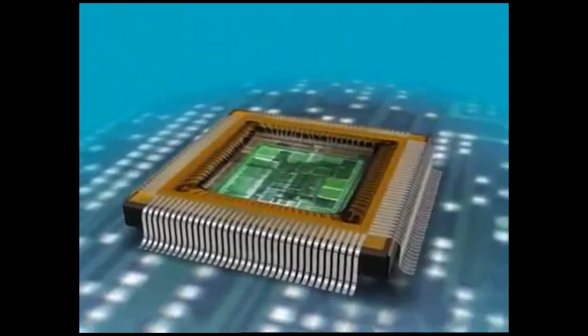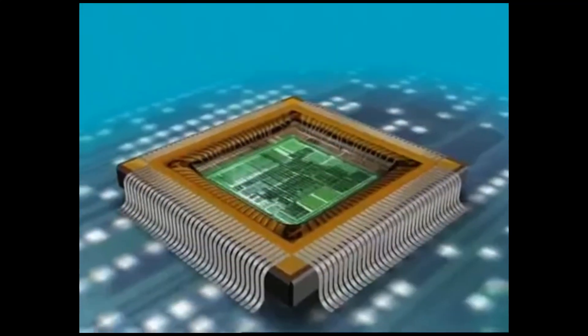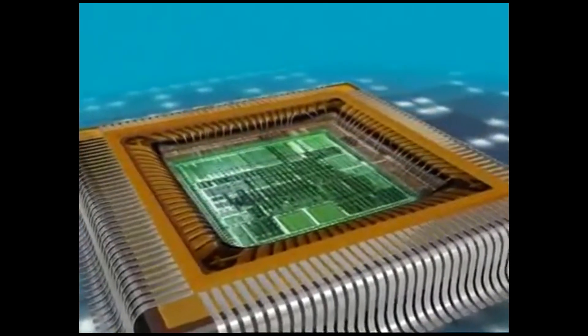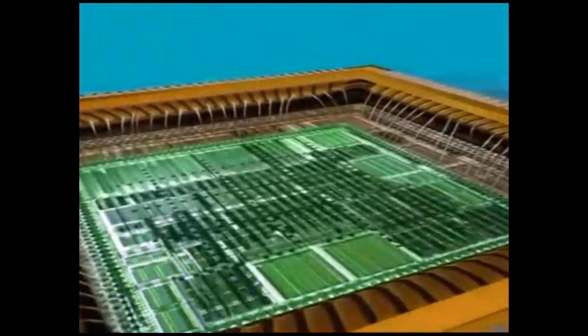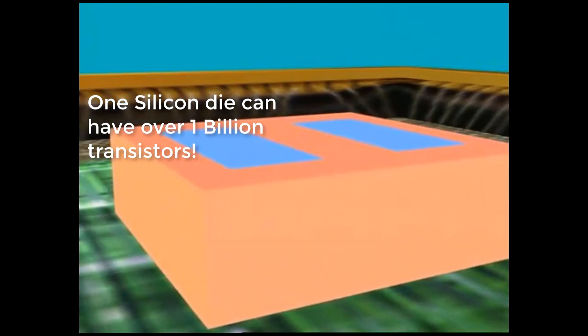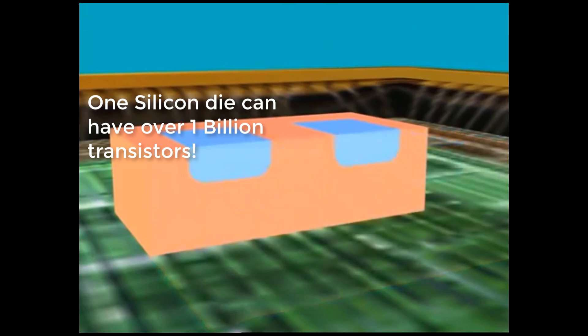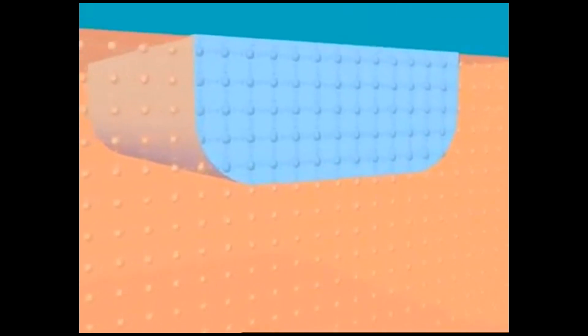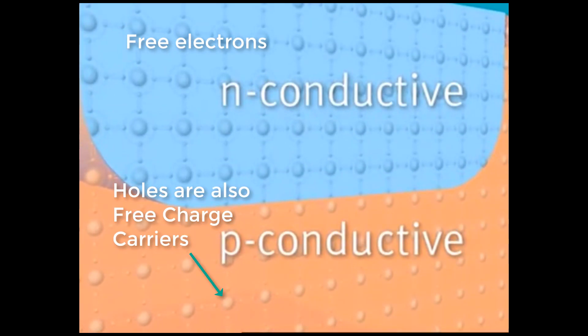The transistors in modern memory chips are constructed from P and N conductive layers such as these. Transistors are the smallest control units in the microchips. In the heart of an NMOS transistor, for example, we find P and N conductive layers of silicon crystals.